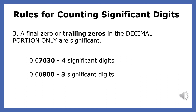Rule number three: a final zero or trailing zeros in the decimal portion of a number are always significant. The leading zero, 0.0, doesn't count — only the bolded numbers are actually significant. So 7, 0, 3, 0 — all of those are significant, giving four significant digits. Again, leading zeros don't count. So for 8.00, those last two zeros count — that has three significant digits: the non-zero 8 and the two trailing zeros. The third rule is that the final zero or trailing zeros in a decimal portion are significant.